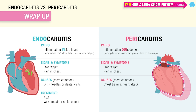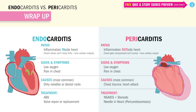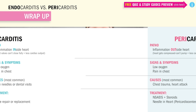For pericarditis, which is that pressure around the heart, we can give anti-inflammatory medications like NSAIDs and steroids. But if it's really bad, then we stick a big needle in and drain that heart sac — called a pericardiocentesis.